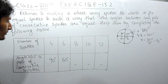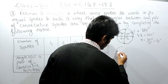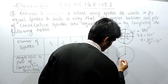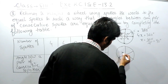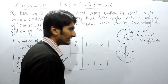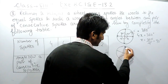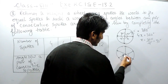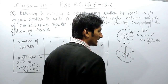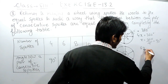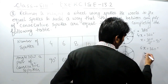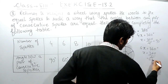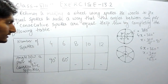Now the number of spokes is 6. If this is the wheel with the center, and there are 6 spokes, again all the angles between two consecutive spokes are equal. All these 6 angles are equal, so we can say 6x = 360, and the value of x here will be 360 divided by 6, which is 60 degrees. This is how the second angle is found.